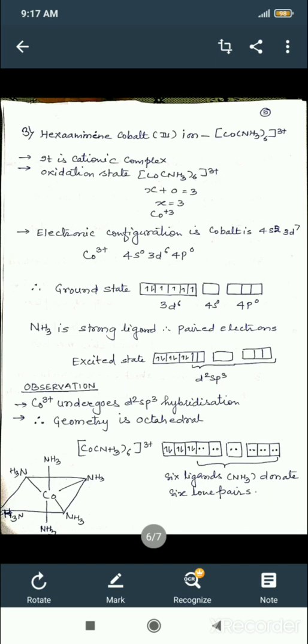Try to write down this hybridization. First, calculate the charge, which is +3. The atomic number of cobalt is 27: 4s² 3d⁷. But for Co3+, the electronic configuration is 4s⁰ 3d⁶. Six electrons in the ground state will undergo pairing in the excited state, so there will be three pairs.